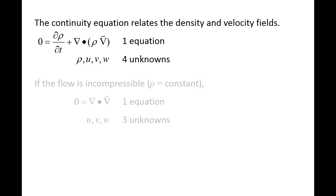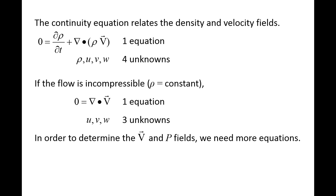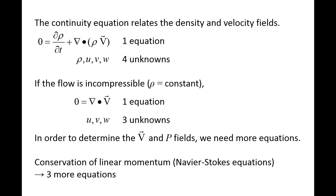Looking at the big picture, the continuity equation relates the density field and velocity field in a single equation. However, there are four unknowns: density and the three velocity components, which may vary in time and space. Many flows can be approximated as incompressible, which simplifies the continuity equation and removes density as an unknown. But we still do not have enough equations to solve for all the unknowns. In order to determine the velocity field, as well as the pressure field, we need more equations. The conservation of linear momentum equations, also called the Navier-Stokes equations, are required to solve for the velocity components and pressure at all locations in a flow. The Navier-Stokes equations will be derived in a separate video.